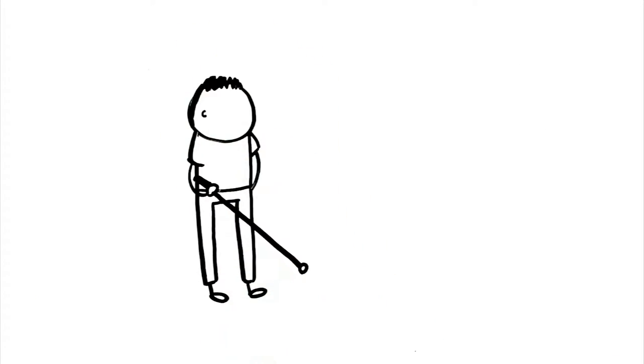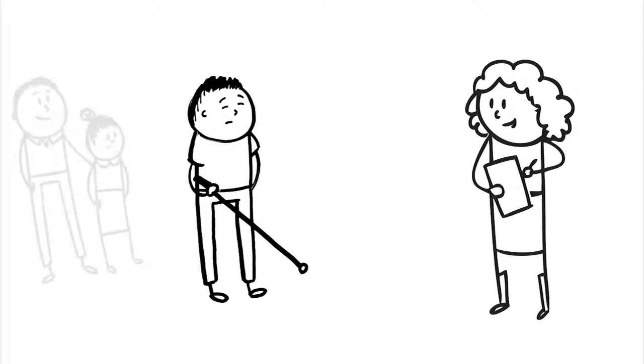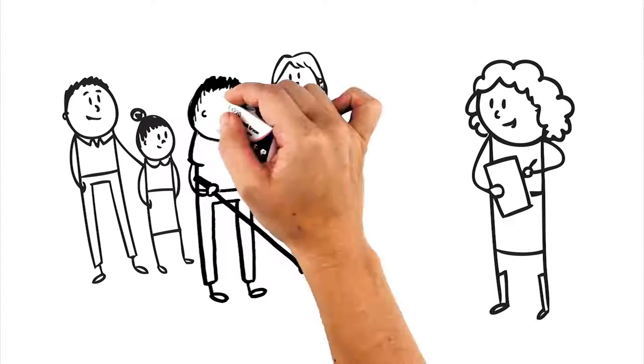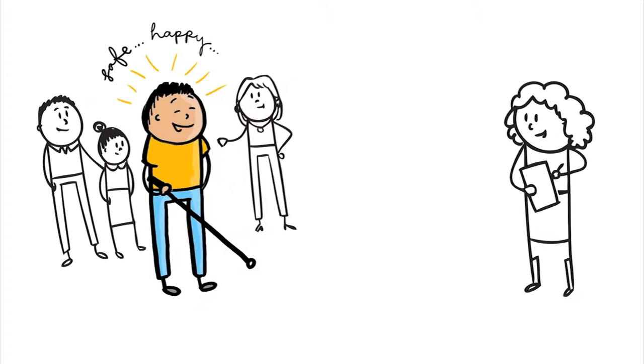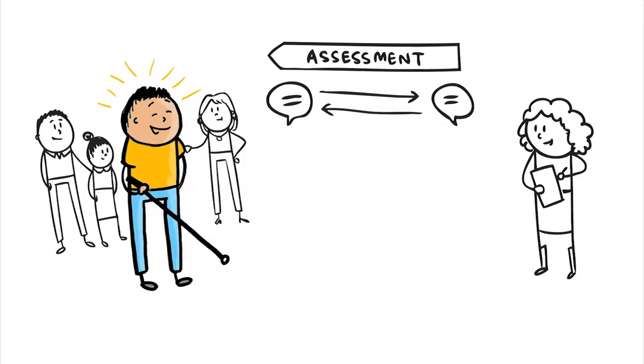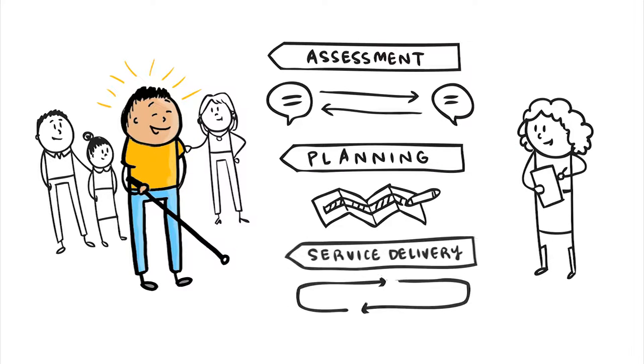When people use our services, we need to work with them, their families and carers to help them do as much as they can for themselves and to maintain their quality of life. We can do this through a model that includes assessment, planning and service delivery.